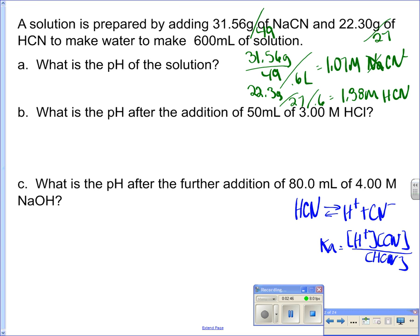So to figure out the pH then, I'm going to again write the dissociation. HCN yields H+ plus CN-, but what I know in this case is that my HCN is 1.38 molar, but my CN- also has a value, and that's 1.07 molar, but I don't have any H.